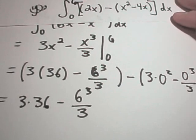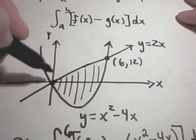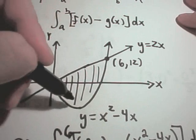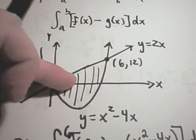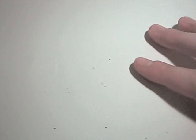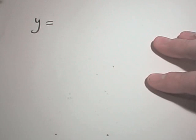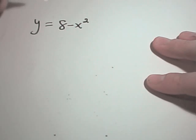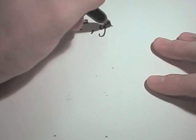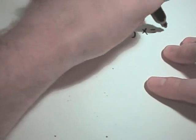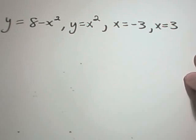So again, not too bad when the picture's already given for you. When you know which one's on top and which one's on the bottom. So let's do one where it's not quite given to us as nicely. Suppose we want to find the area between the curves bounded by y equals 8 minus x squared, y equals x squared, the lines x equals negative 3, and x equals positive 3.